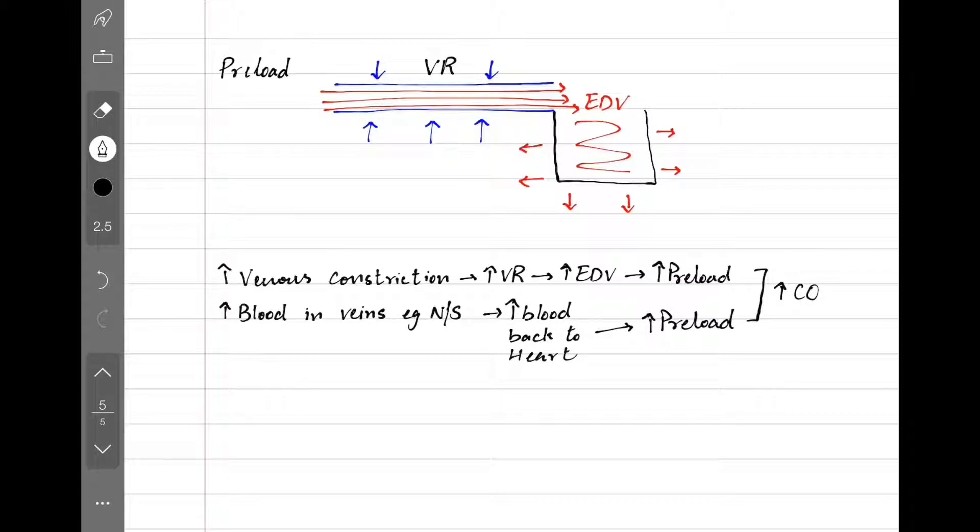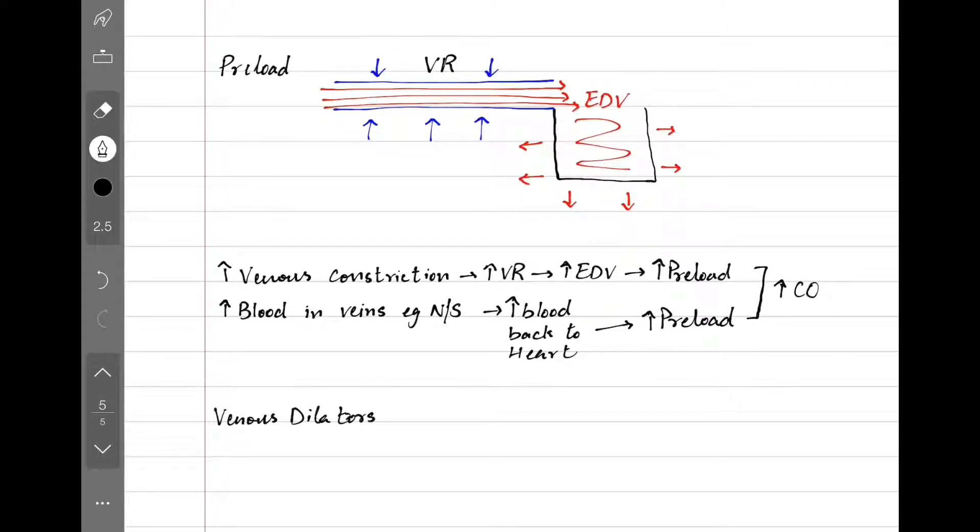What if we want the heart to rest a bit, like during an angina attack? To do that we use venous dilators to reduce preload and decrease the workload on heart. That's why we use nitroglycerin in angina management. Remember ACE inhibitors and ARBs relax both veins and the arteries, so they decrease both preload and afterload.